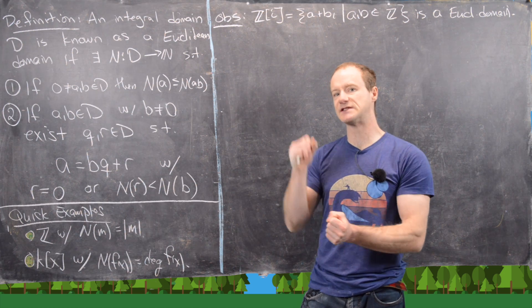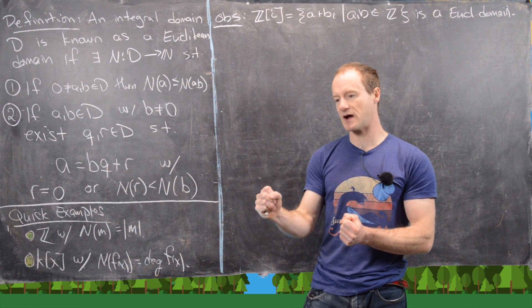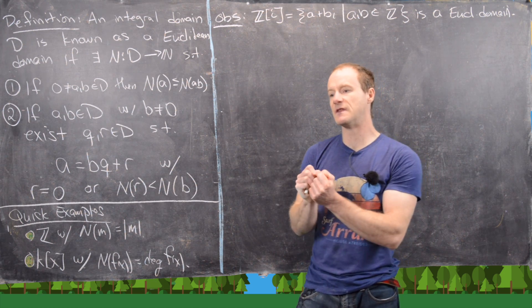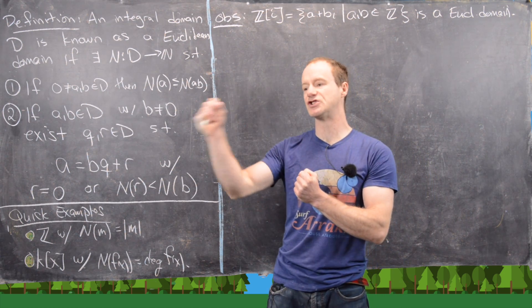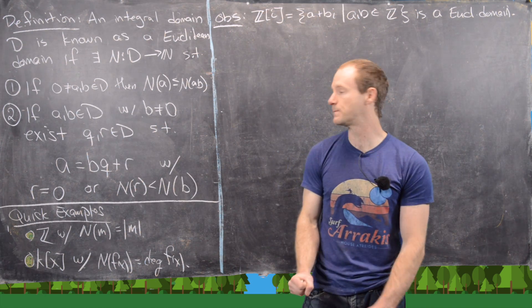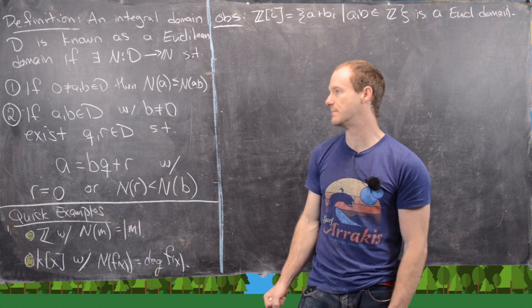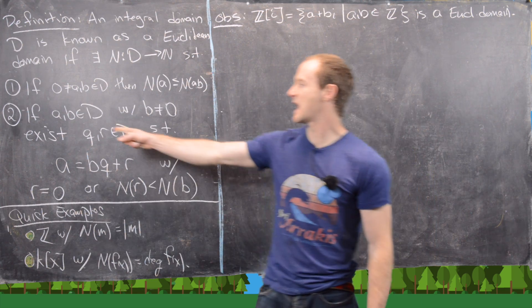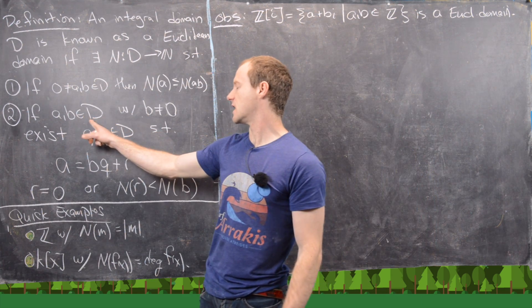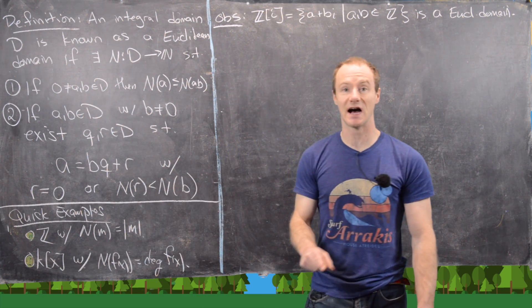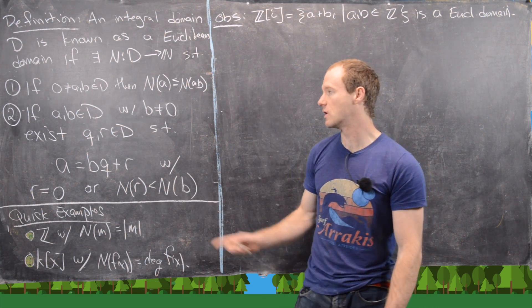What this means is that if you're multiplying by a non-zero element, then that only takes you higher in the norm, or keeps you the same. The next thing: if A and B are in the domain where B is not equal to zero, then you can form something like division with remainder.